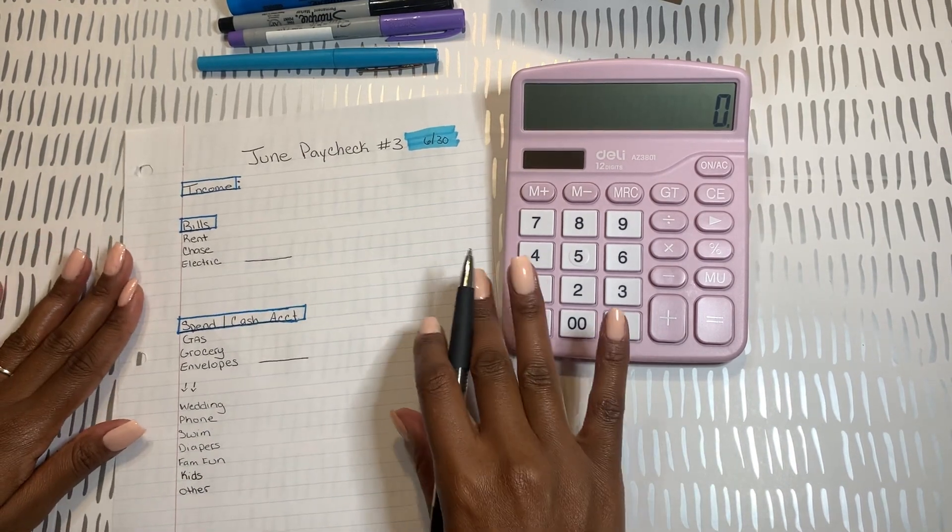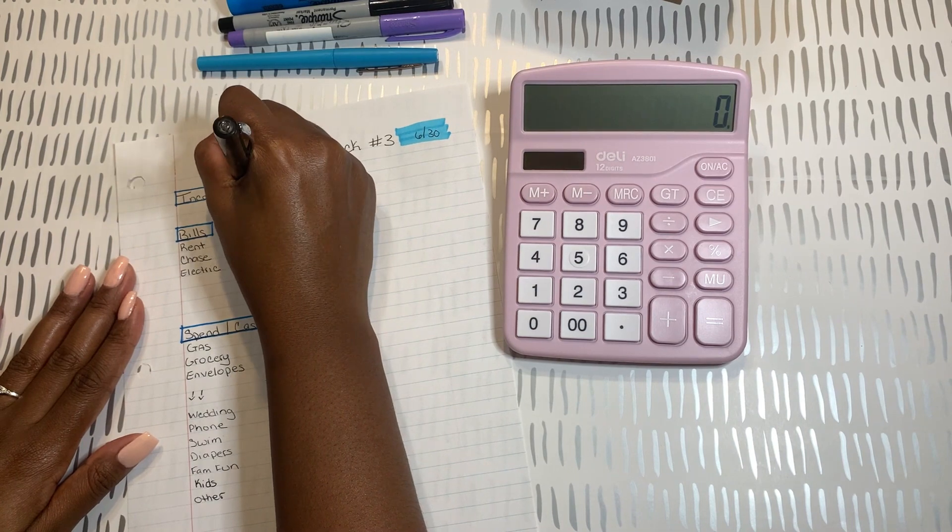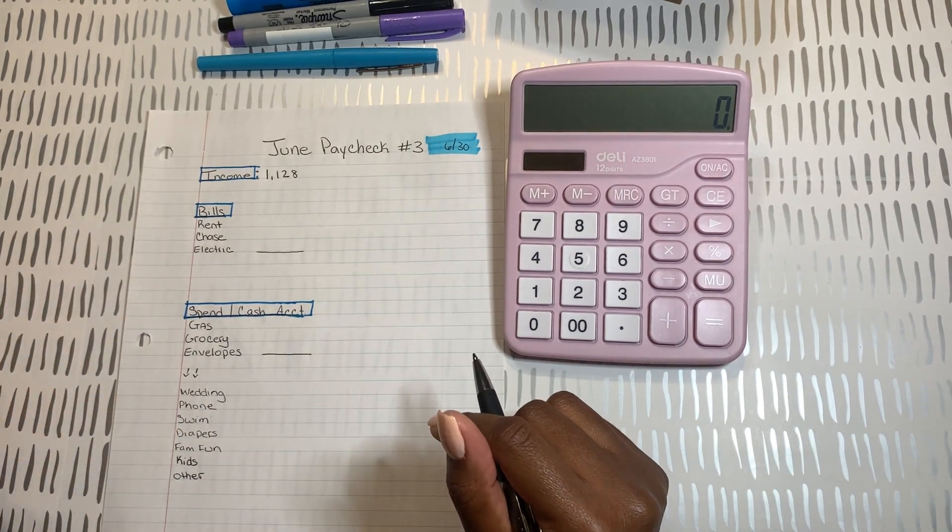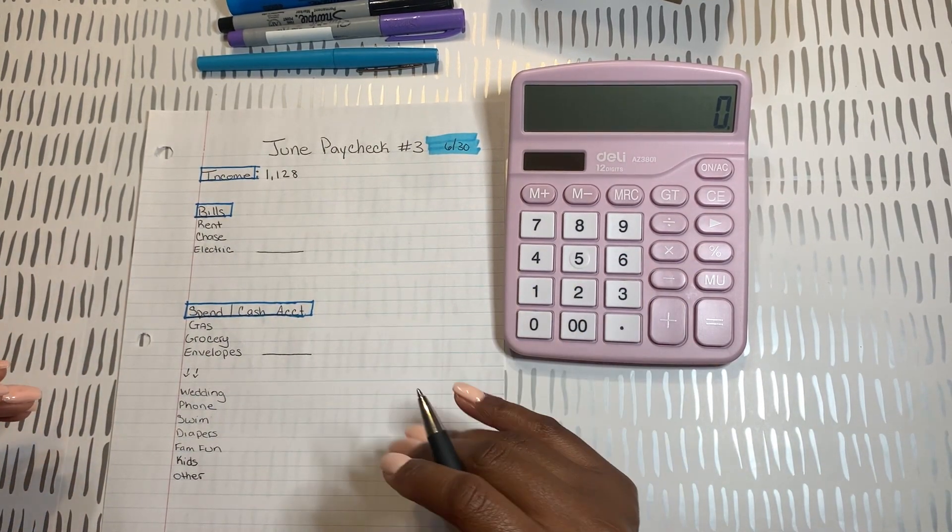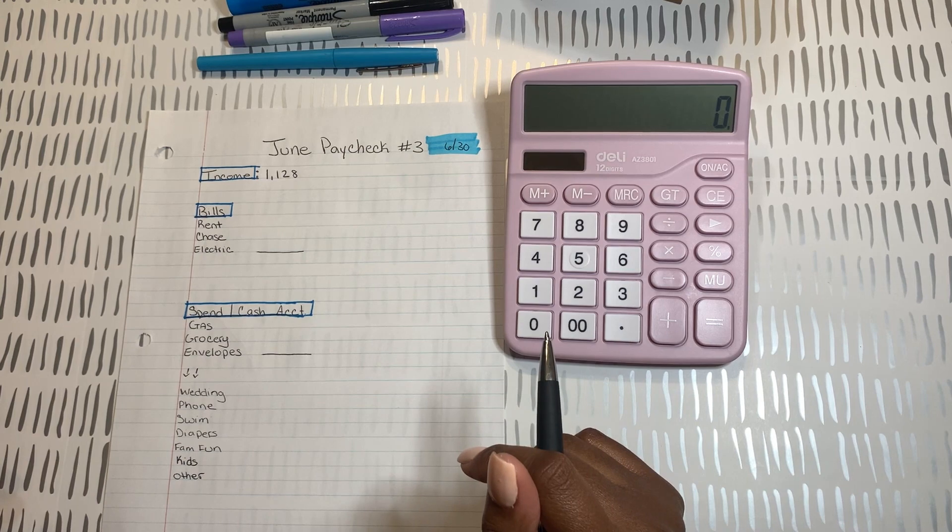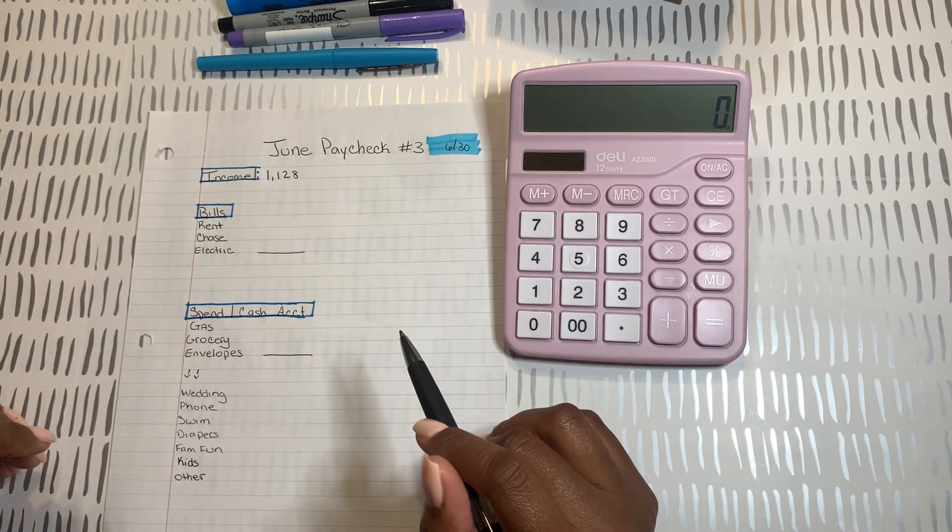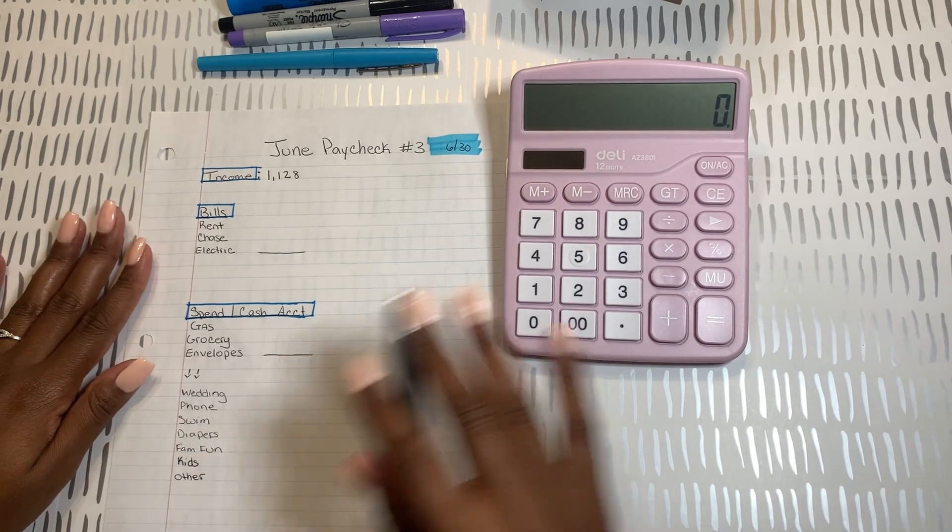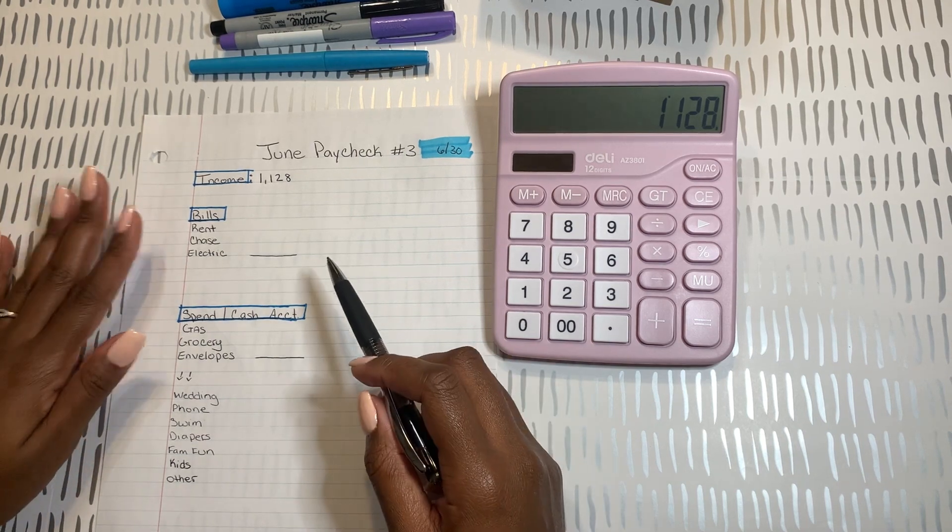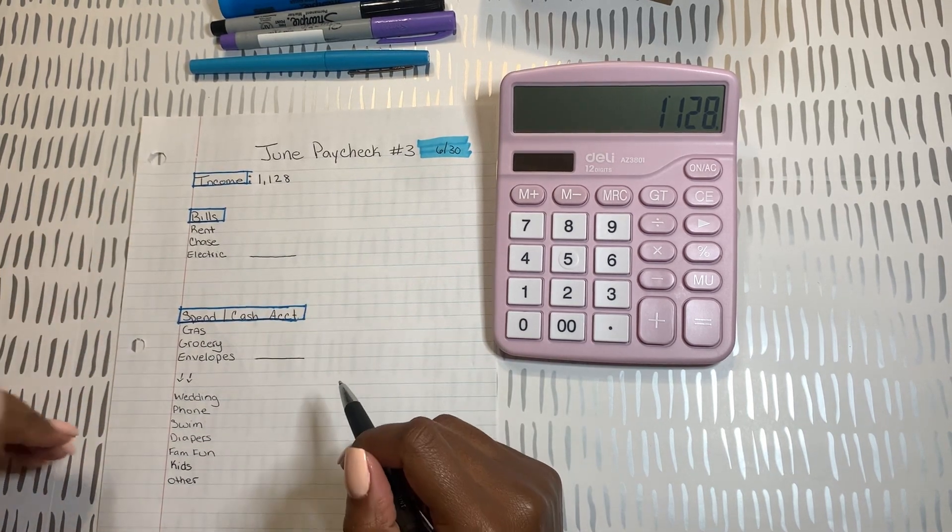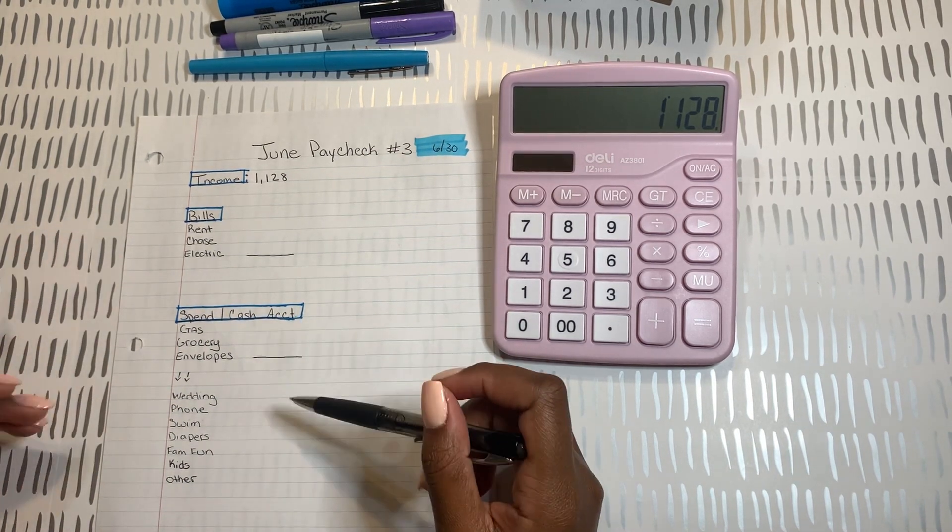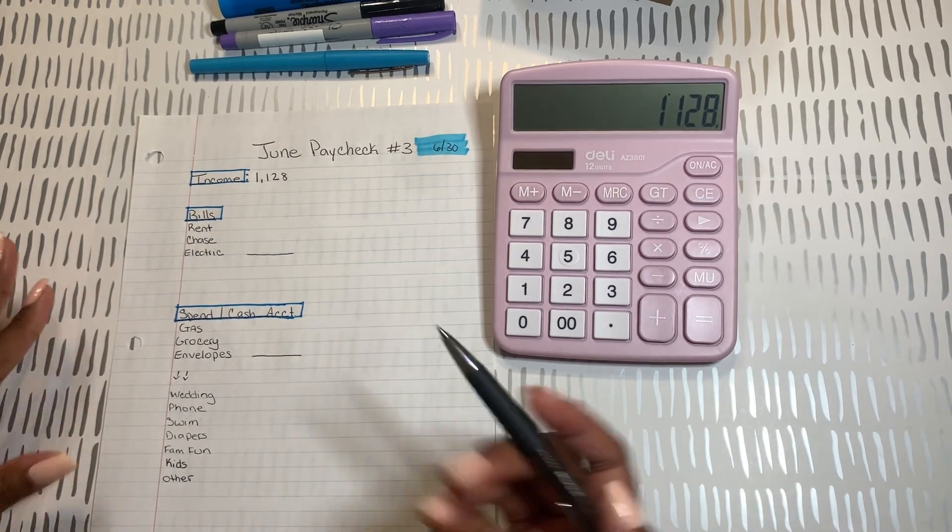So my income for this check was a little lower, it was $1,128. As I've said before, I work Monday through Friday, 8 to 4:30. I don't get any overtime, but they did allow us to go home early one day. So my check is a little smaller than it normally would be. But for this check, I didn't have a lot of bills to pay. The main thing in June I was trying to focus on was paying off my Chase card.